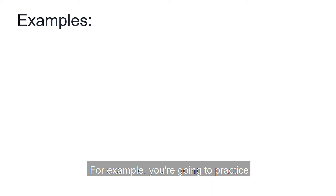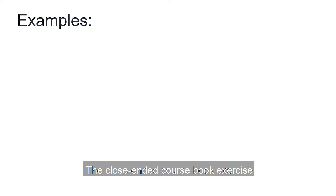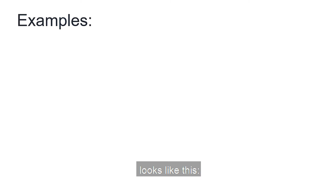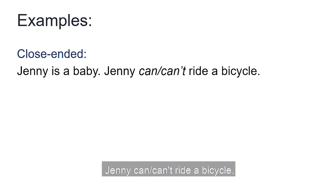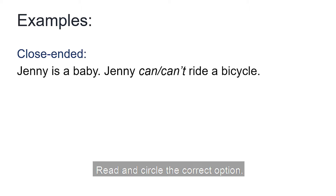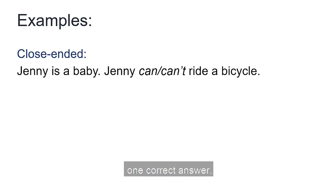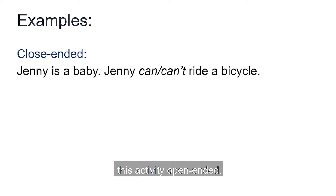For example, you are going to practice can/can't structures with your students. The close-ended coursebook exercise looks like this: 'Jenny is a baby. Jenny can/can't ride a bicycle.' The instructions say: read and circle the correct option. And of course, there is only one correct answer. Let's try to make this activity open-ended.